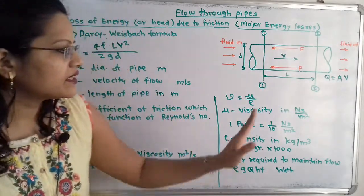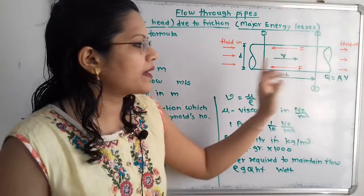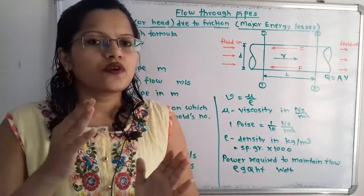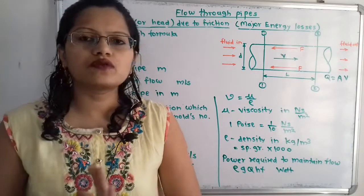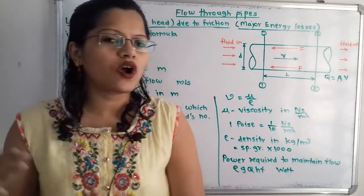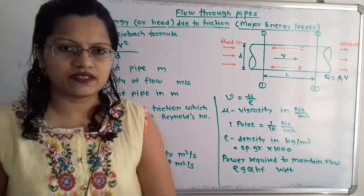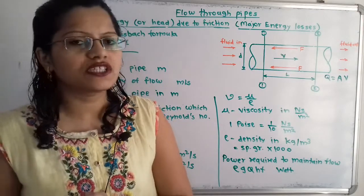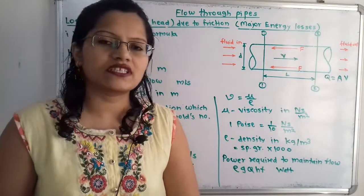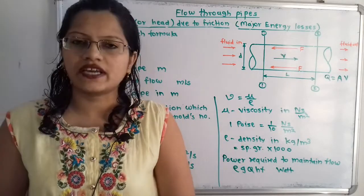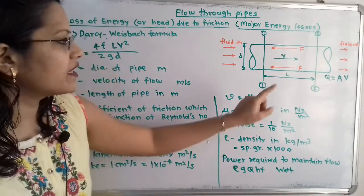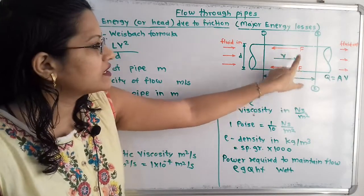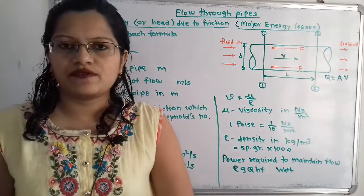In between section 1 and section 2, there is the length of pipe, that is L. Now, why is there friction? When the fluid is flowing through the pipe, it is in contact with the pipe surface, so there is friction, and due to this friction there are energy losses — a loss in head. I have shown here the friction acting in the opposite direction of the fluid flow, represented by capital F.